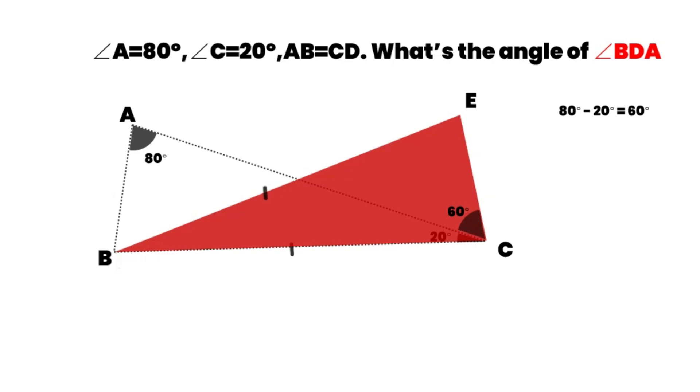So, BE is equal to BC. Angle CBE is equal to 20 degrees. Let's go ahead.